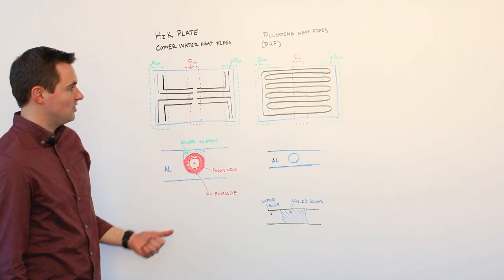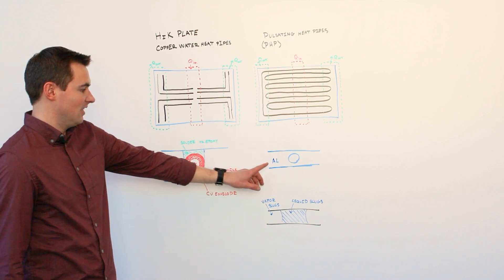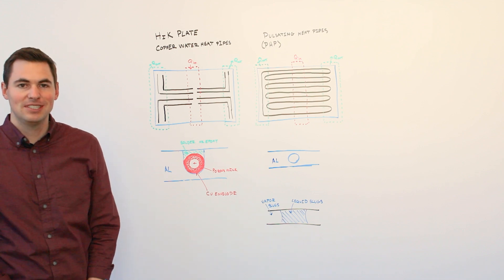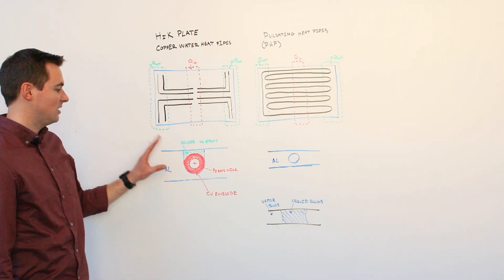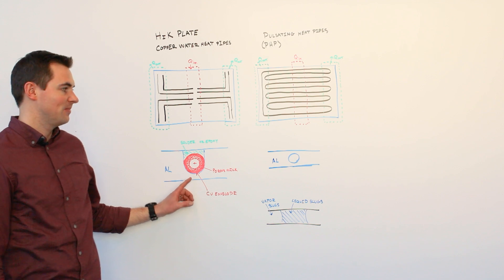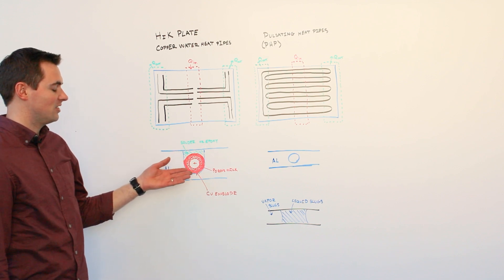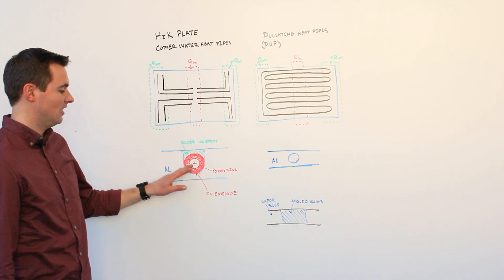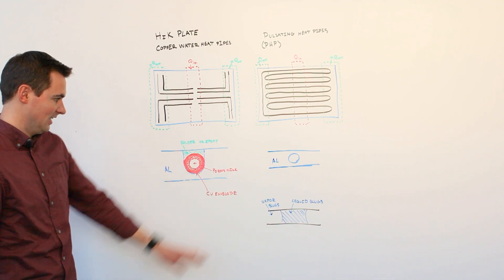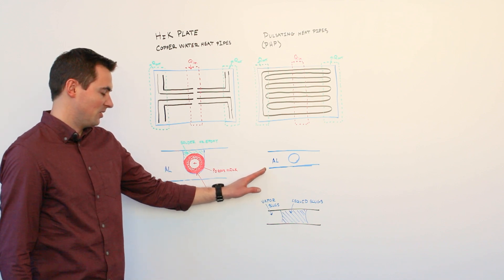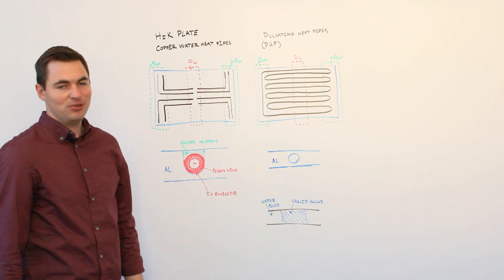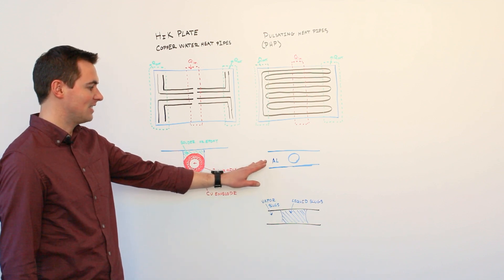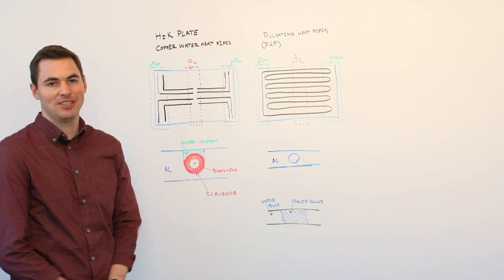Another reason you may choose a pulsating heat pipe is that this configuration can be compatible with many working fluids, whereas copper water heat pipes typically use water as the working fluid. So for applications where temperatures are below zero and there's a likelihood of freezing with water as your working fluid, pulsating heat pipes are compatible with many other working fluids such as ammonia or alcohols or refrigerants. So for space applications or other applications where you're looking at cold temperatures, pulsating heat pipes may be a good option.